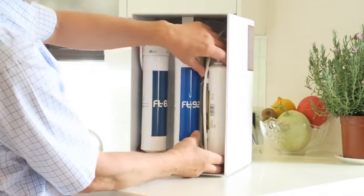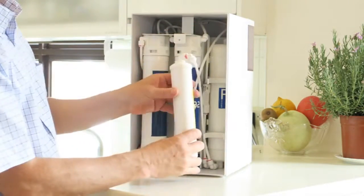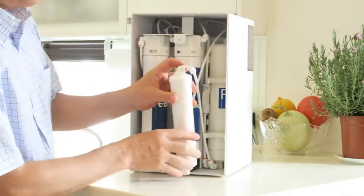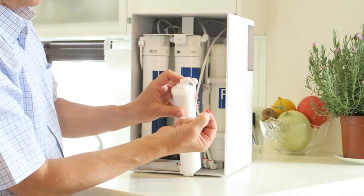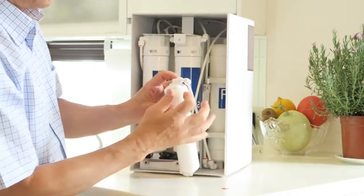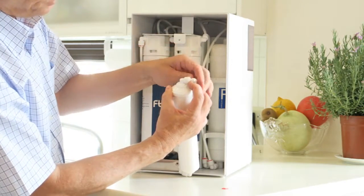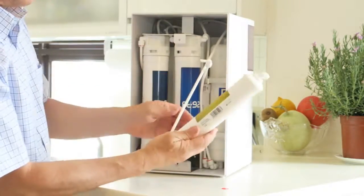To replace the post filter, just pop it out of its holding clamps. And at the top and the bottom are quick connectors. So to remove the quick connector, there's a little C-clamp that locks it in place. Just slide the C-clamp out. And then there's a little collet at the top. You push it in and as you hold it in, slide the tube out. And it's the same thing at the bottom.